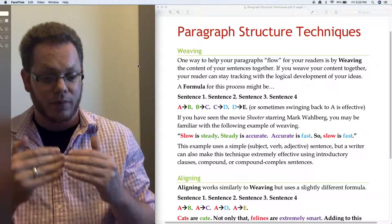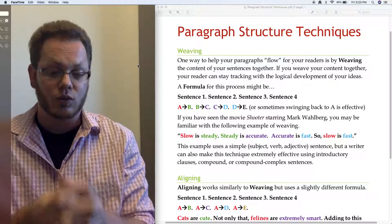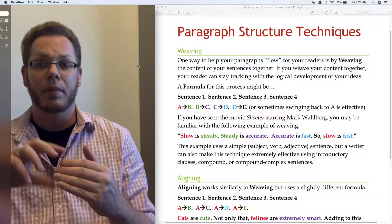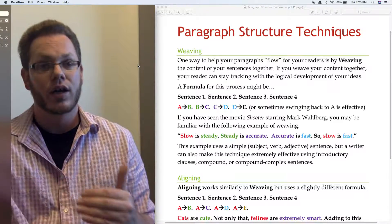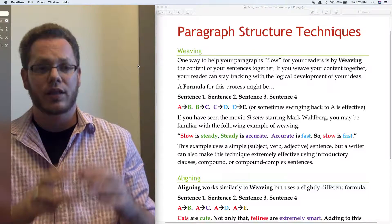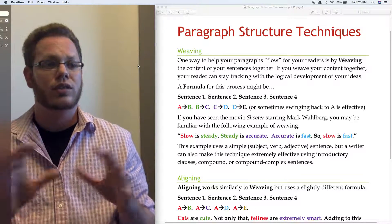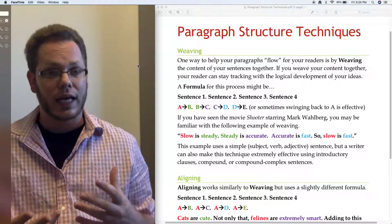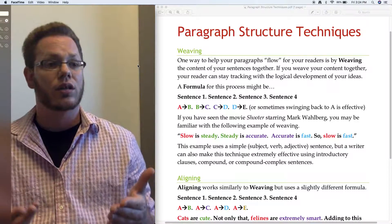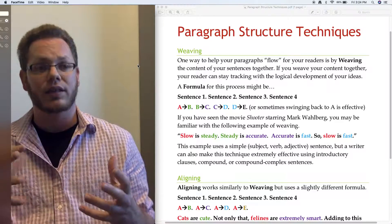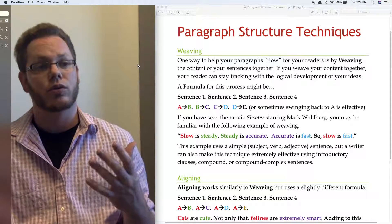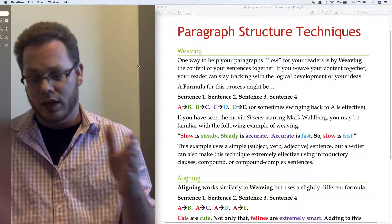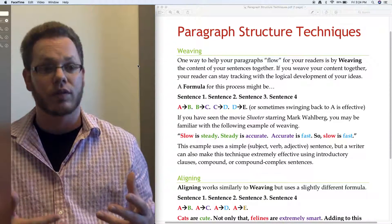When we're talking about this idea of weaving, it really is that the thing that ends the first sentence, its role is to add detail to what came before. In the next sentence, it is meant to bridge a gap to the thing that comes after. This is a really simple example using simple subject, verb, adjective sentence structure just to model the principle, but a lot of times when we're dealing with academic topics or more intense topics, we're dealing with more complex things. A writer can make these techniques extremely effective using introductory clauses, compound, or compound-complex sentences, instead of just the simple sentence structure. That's weaving.